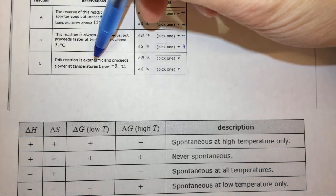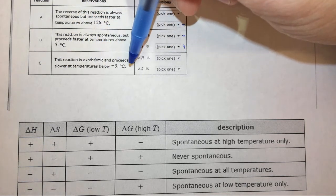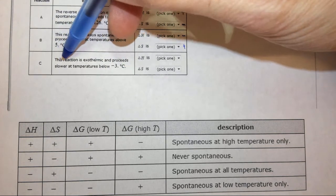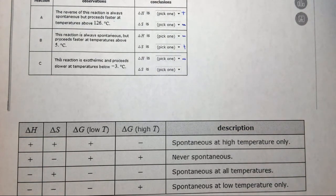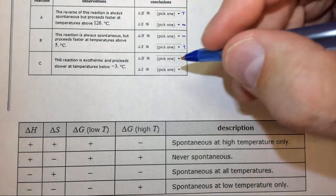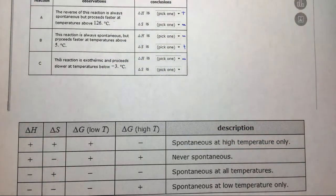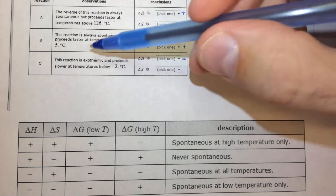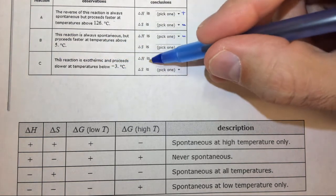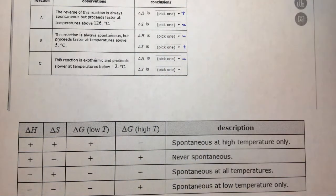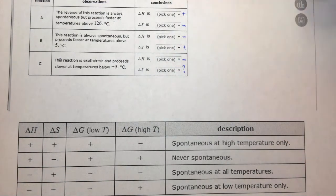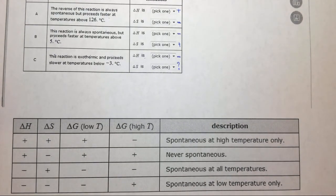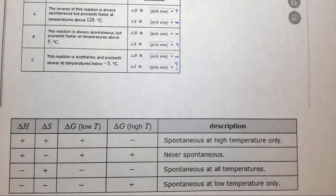Finally, the reaction is exothermic and proceeds slower at temperatures below 3 degrees. Again we have something about the rate — we can ignore that. By definition, an exothermic reaction has a negative delta H; that's what exothermic means. However, this doesn't tell us anything about delta S because it doesn't tell us anything about the spontaneity of the reaction. We only know about delta H; we don't know about delta G, so we can't predict anything about delta S. So delta S gets a question mark — or in the drop-down box, you would choose 'unknown.' This is how you can think your way through these particular problems using the table provided in the help or explanation section of the question.